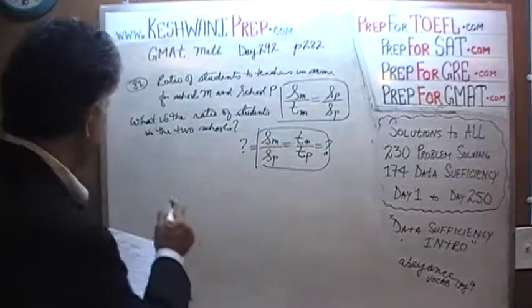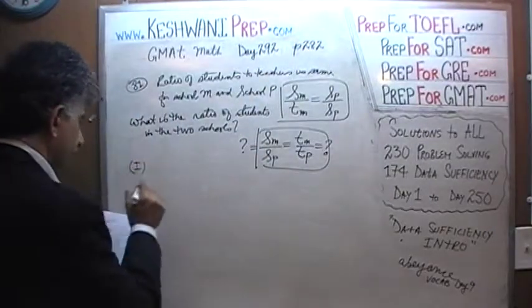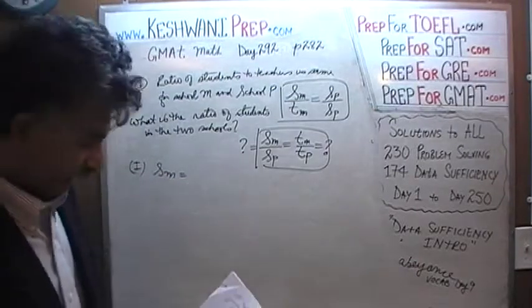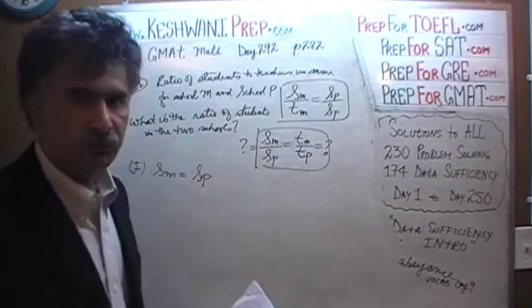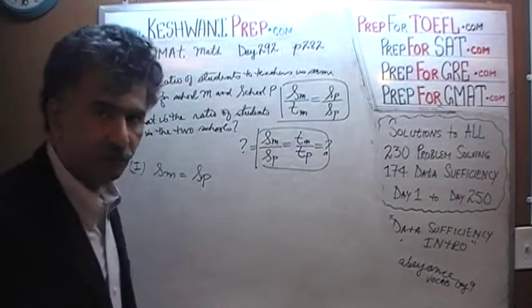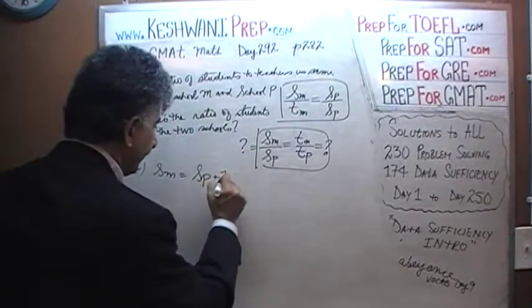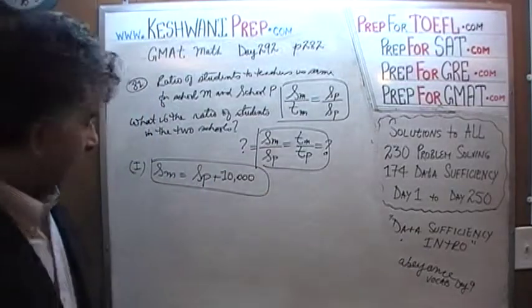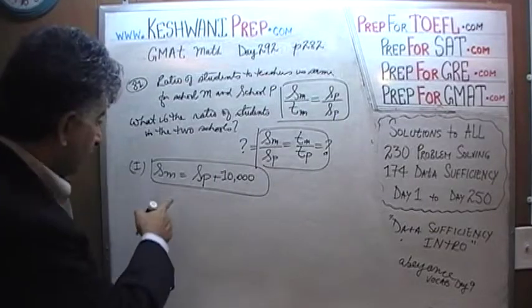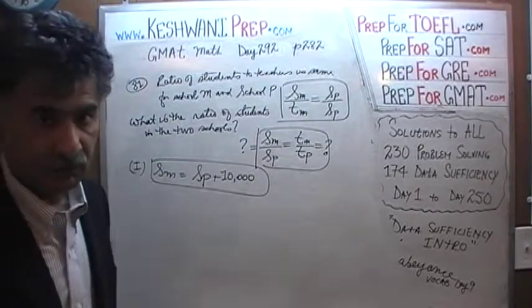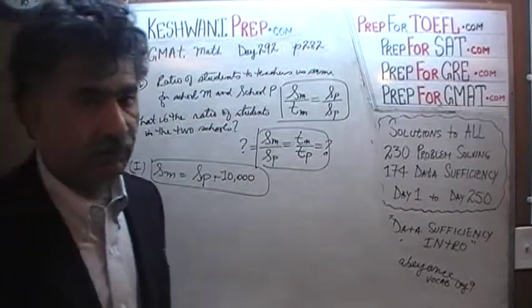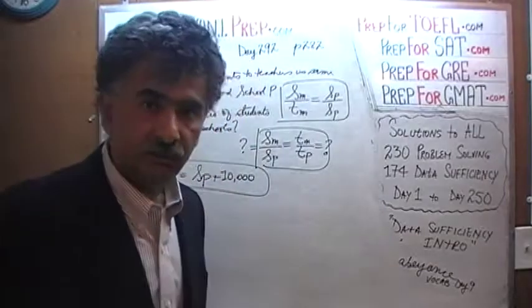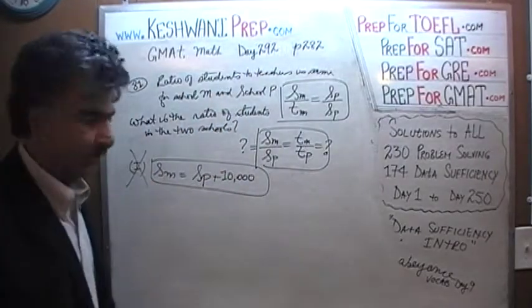Statement 1 tells us that the number of students in school M is 10,000 more than the number of students in school P. Whatever the number of students in school P, add 10,000 and that is how many students are in school M. Simply knowing that one school has 10,000 more students than the other does not enable us to figure out the ratio of students in the two schools. The first statement is not enough.